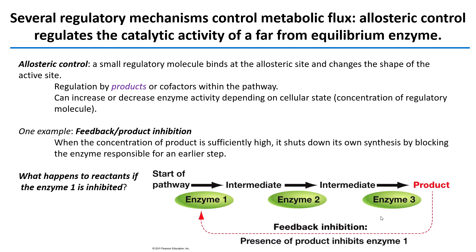What are the regulatory mechanisms that control metabolic flux? One way to control metabolic flux is to regulate the catalytic activity of the far from equilibrium enzymes — the enzymes that catalyze those rate determining steps. This can be done through the use of inhibitors. A lot of metabolic enzymes are allosteric enzymes, where the active site binds its substrate and turns it into product, but there's another pocket called an allosteric site that binds a regulatory protein. When an allosteric site is bound to its regulatory protein, that changes the shape of the active site and changes the enzyme's affinity for binding its substrate.